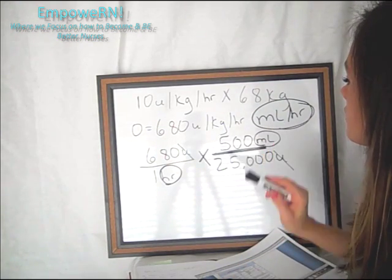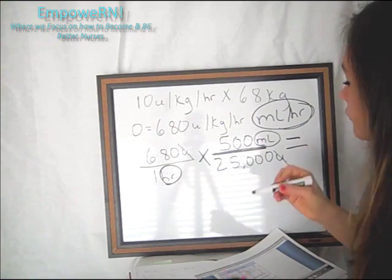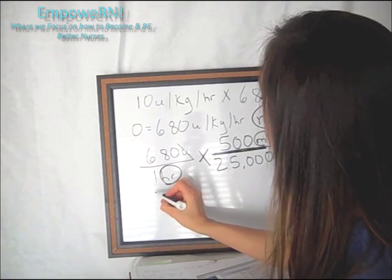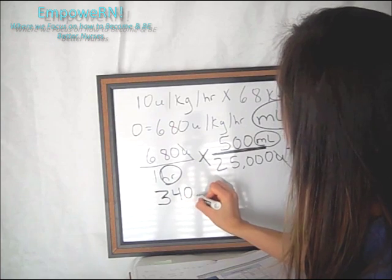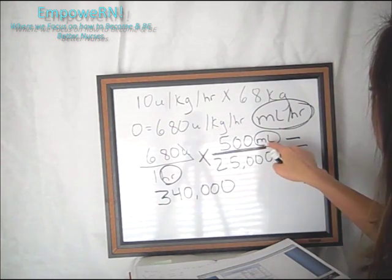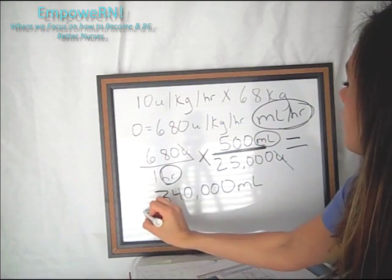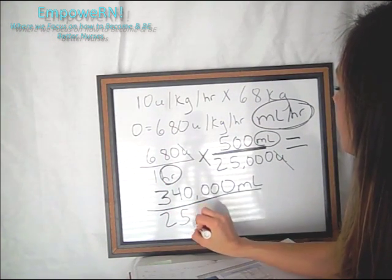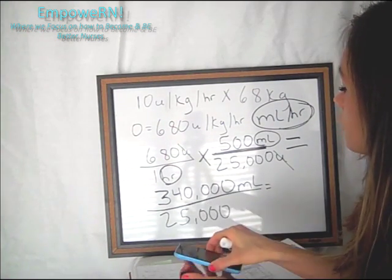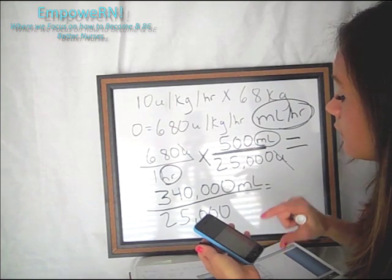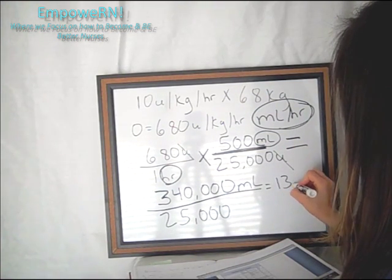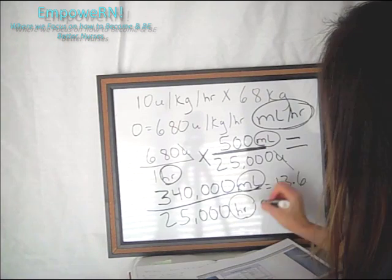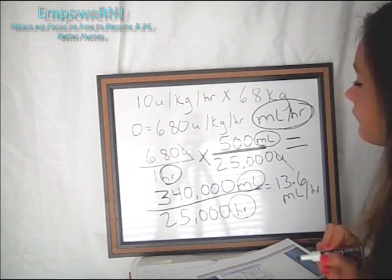So again, we just multiply this by this and this by this. So 680 times 500 is 340,000. Always really important to make sure you grab whatever it actually is. And we take 1 times 25,000, and that's in hours. So it's going to be 25,000. So 340,000 divided by 25,000 is 13.6. 13.6 what? MLS per hour. 13.6 MLS per hour.